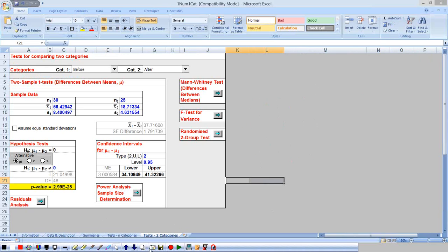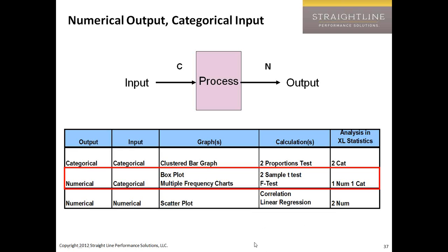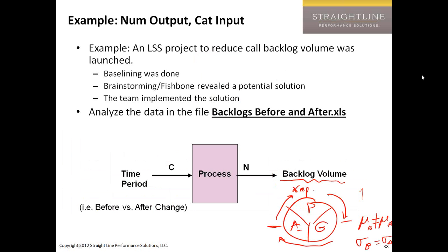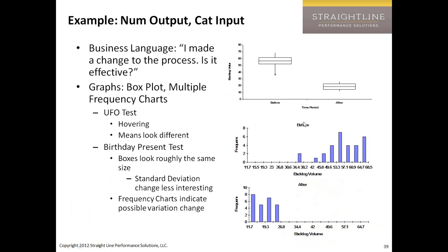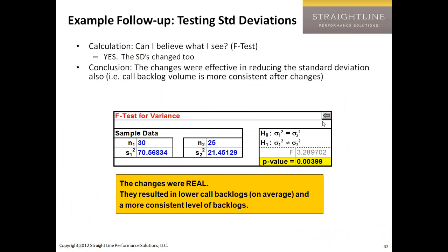So our conclusions: we did our PGA wheel. We asked, are the means the same? Are the standard deviations the same? We went ahead and checked both, and both are different. That means we're going to keep our changes because it looks like the backlogs not only went down, but we're more consistent now, which is also good. On slides 39 through 42, we've got our full analysis of that.